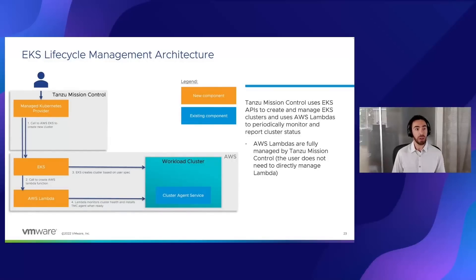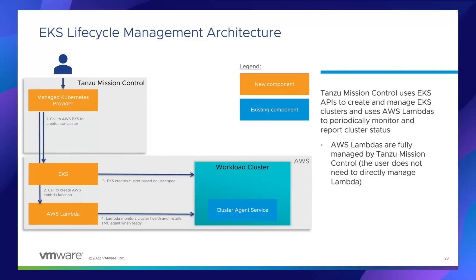If we dive a tiny bit deeper into how EKS lifecycle works — the first thing is we've introduced this new service that runs in the TMC infrastructure called a managed Kubernetes provider. This managed Kubernetes provider is responsible for calling the EKS APIs to create a new cluster. EKS would then create that cluster based on the definition the user provided. At the same time, that managed Kubernetes provider service in TMC is also going to create a Lambda function in the AWS account. That Lambda function will periodically spin up and is responsible for monitoring the cluster health and will install the TMC agent when it's ready. It's really this Lambda that's responsible until the TMC cluster agent comes up.